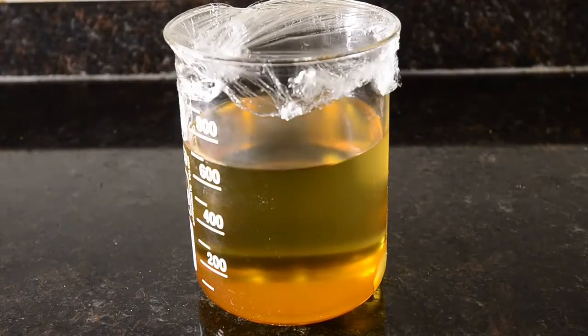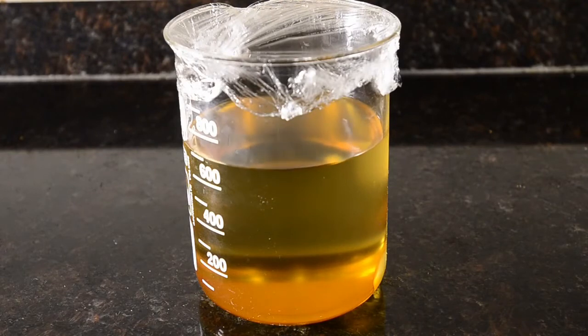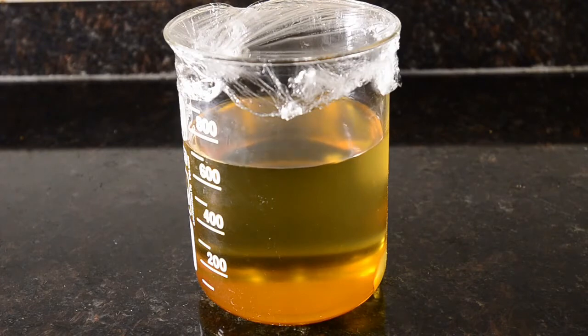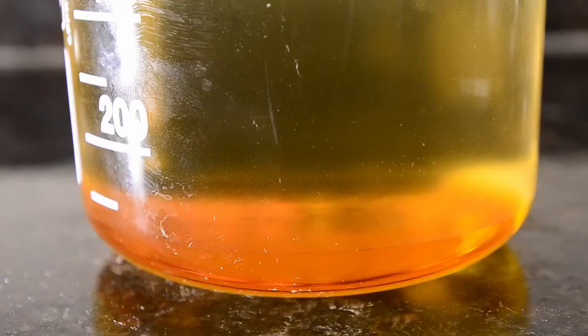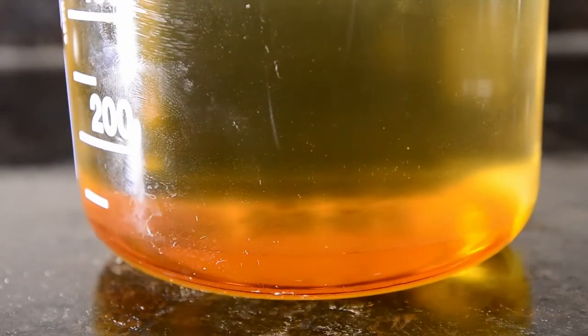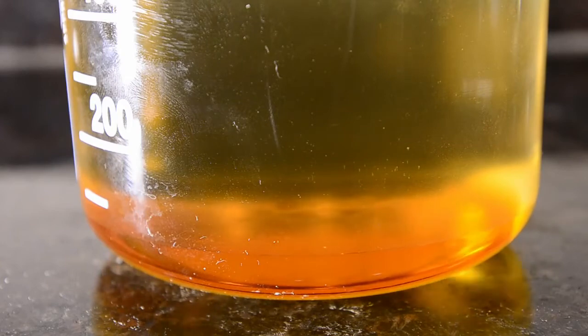Then switch off the stirring and allow to separate. You should see a viscous bottom layer separating out. You can see that the top layer is now a lot more fluid than the starting oil. The bottom orange layer is glycerin produced by the reaction, containing some impurities.